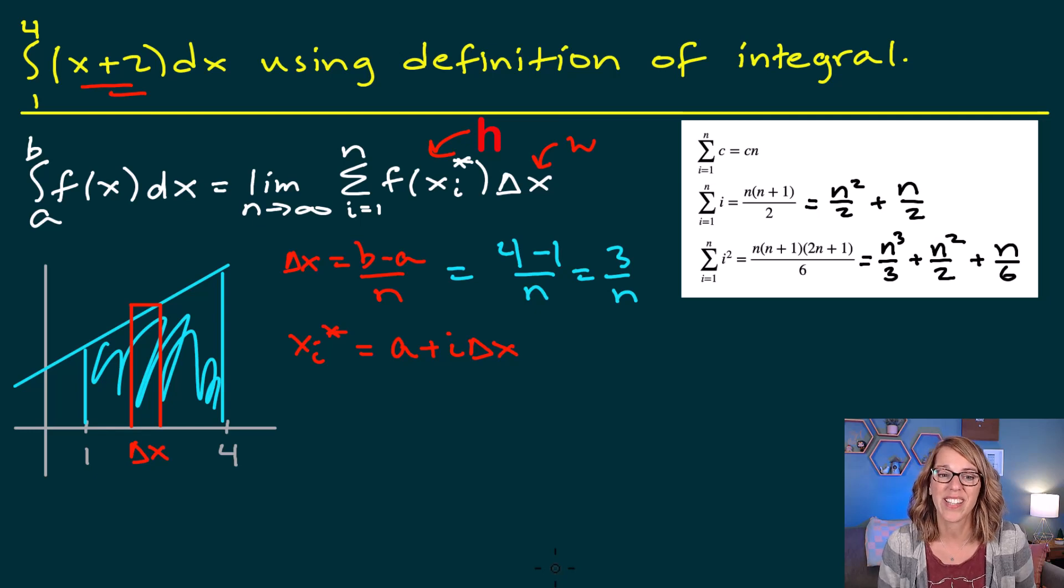So for our example, my start is at 1. So that's going to be 1 plus i times delta x. So that's going to be i times 3 over n. Or we can say that x sub i star is equal to 1 plus 3i over n.